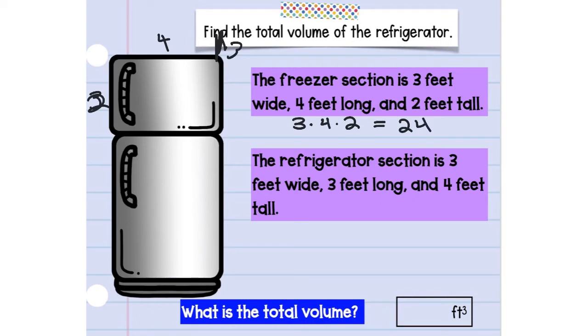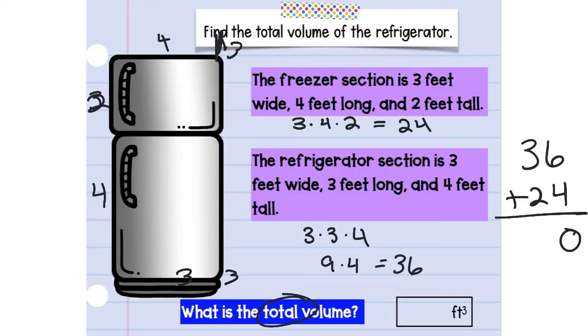The refrigerator section is 3 feet wide, 3 feet long, and then 4 feet tall. So then we would do 3 times 3 times 4. So we have 9 times 4, which we know is 36. But we have to find that total, so we need to add that together. So we have to think 36 plus the 24. We get a 10. And then that becomes 60. So this would be 60 feet cubed.